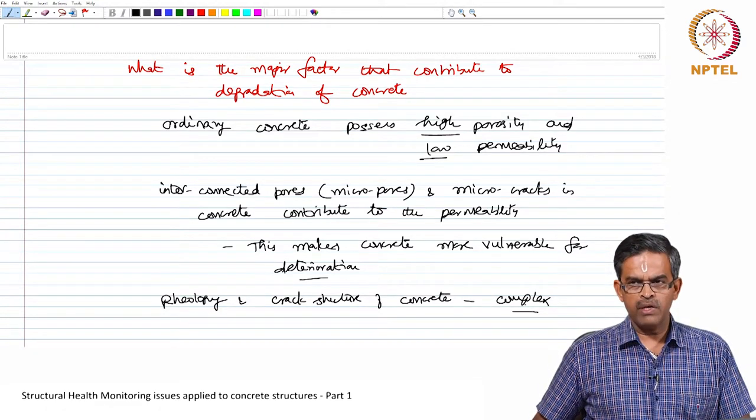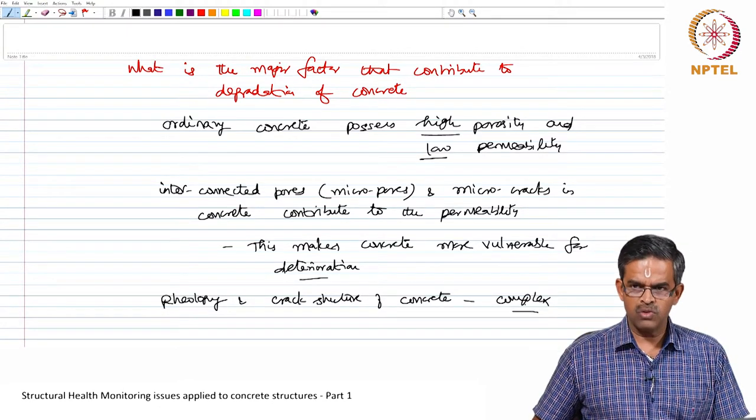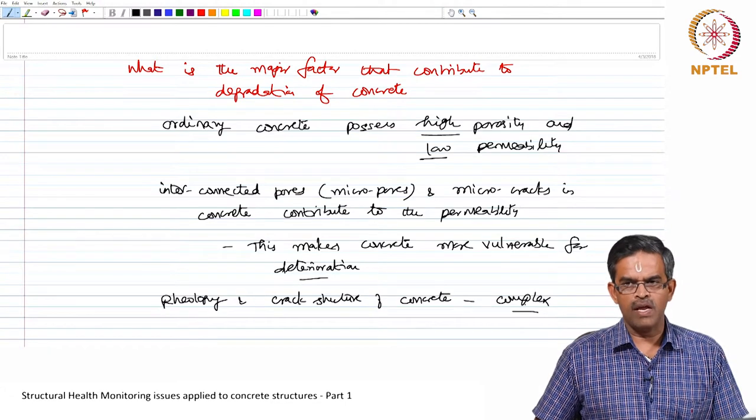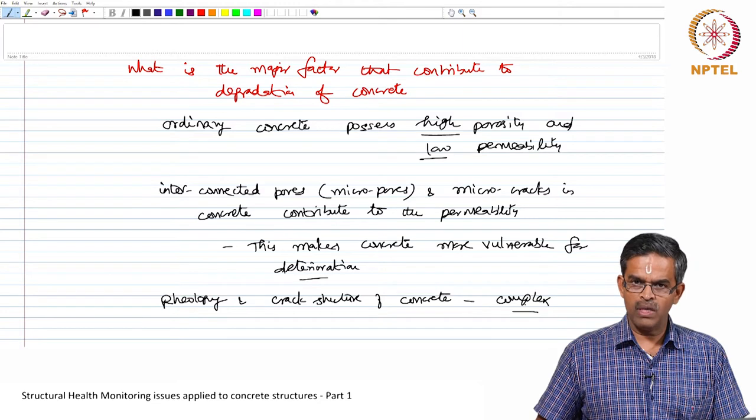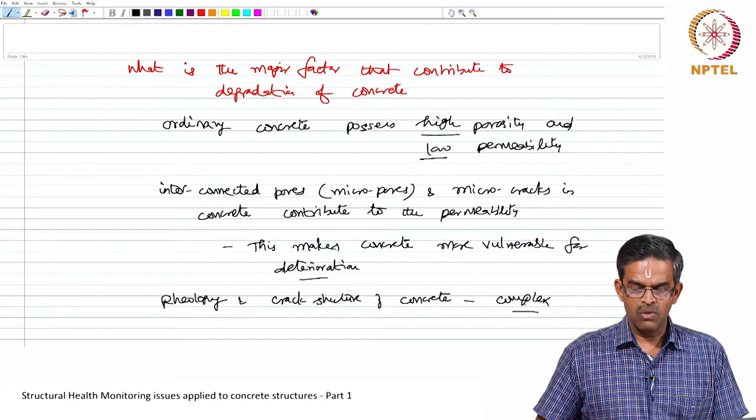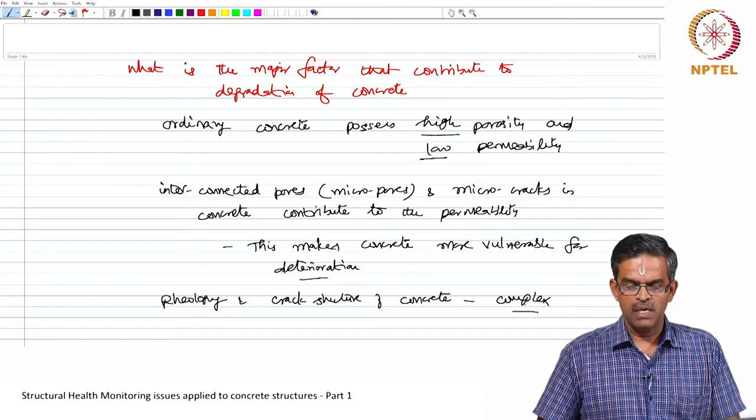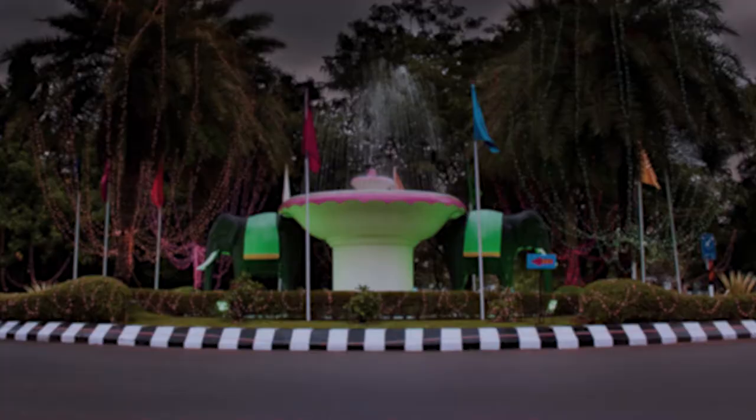So, health monitoring of concrete is actually not a physical process, it is also not an electronic process where you can simply measure the strain values and displacements and deformations. It is actually not purely a chemical process because it also contributes from other sources of physical and mechanical. So, all put together, health monitoring of concrete essentially becomes a multi-physics dimensional problem. Thank you for now.